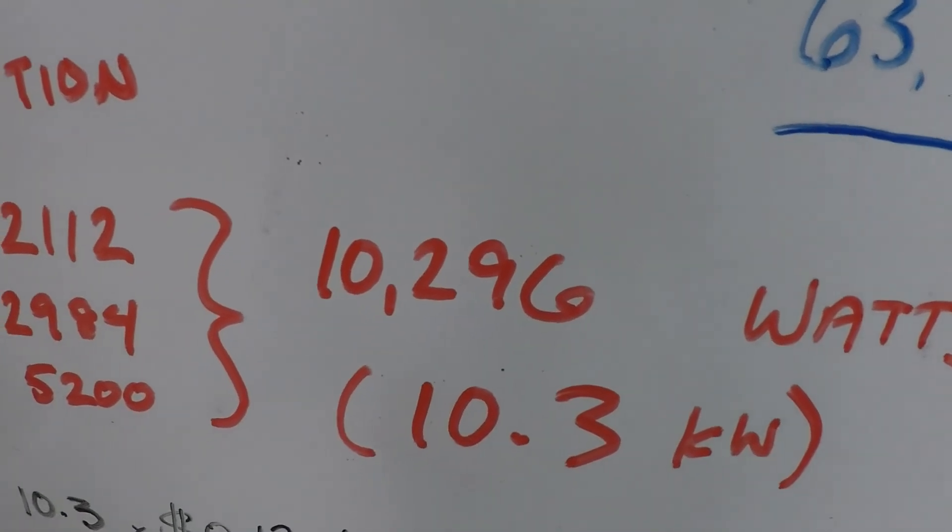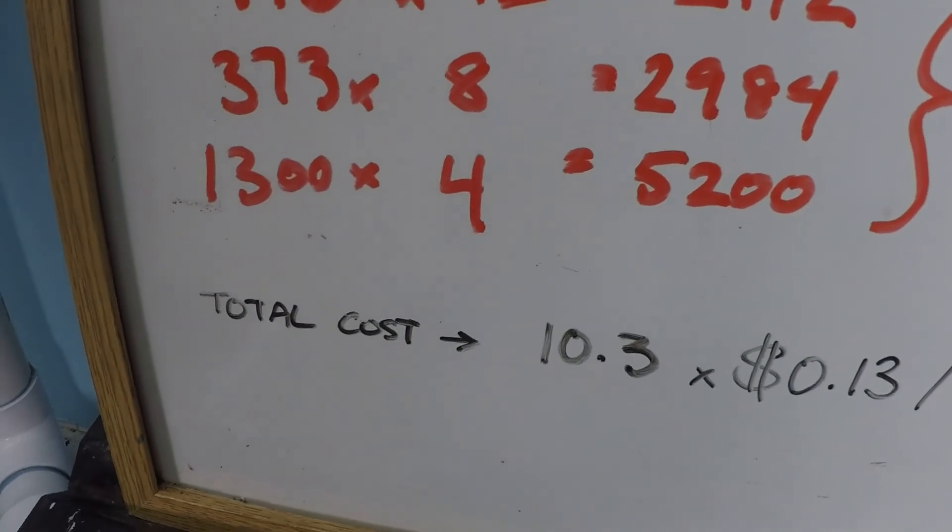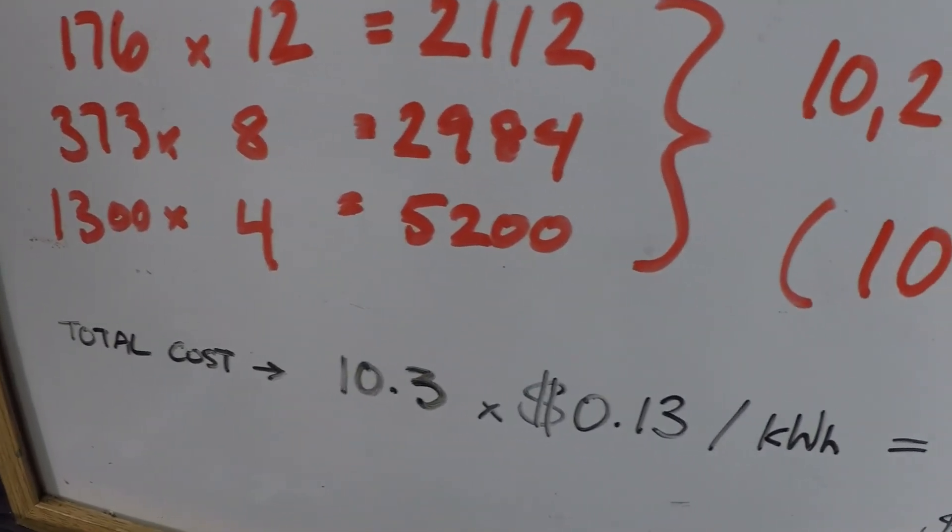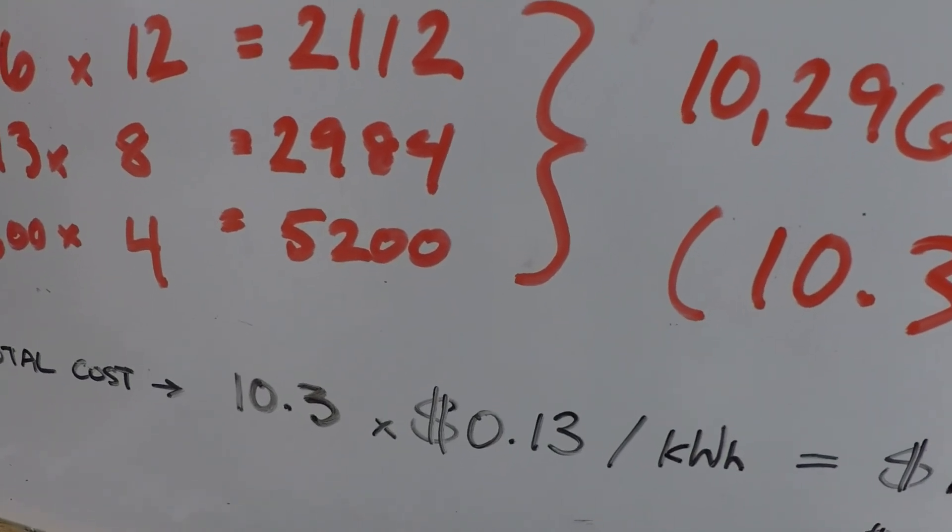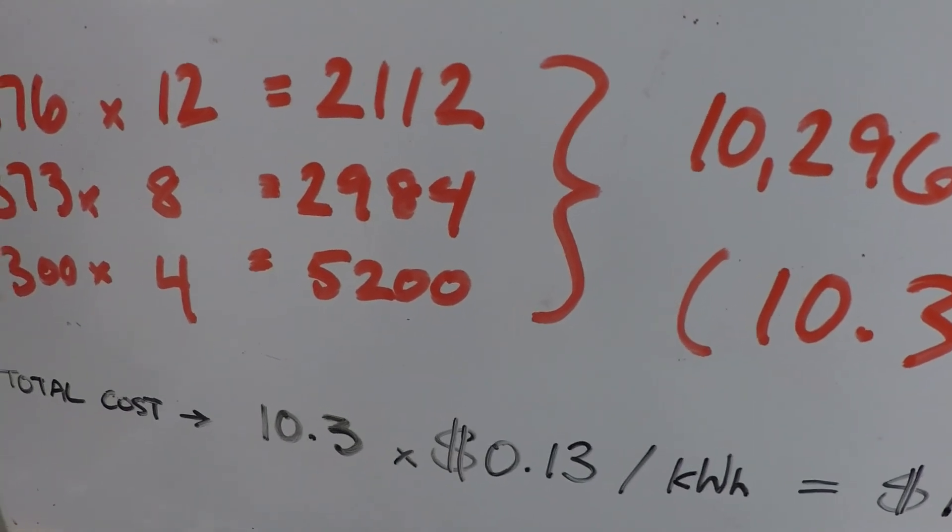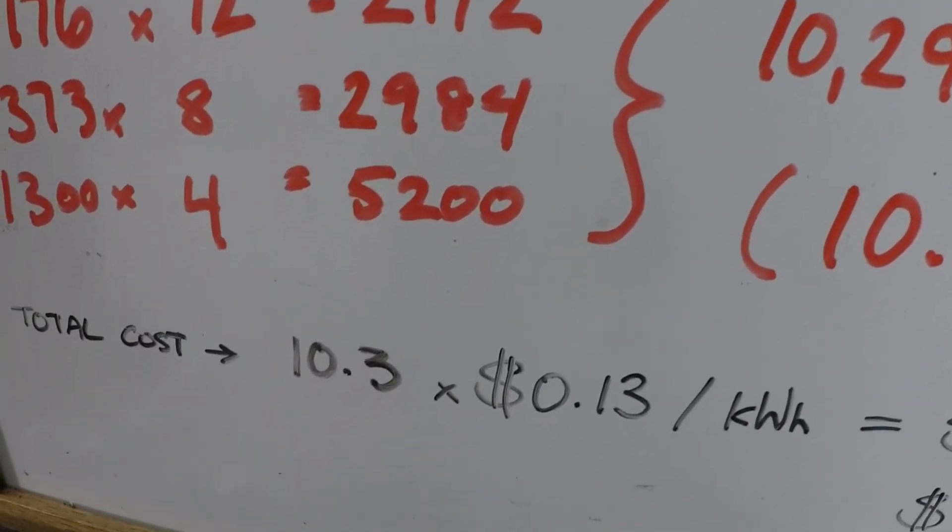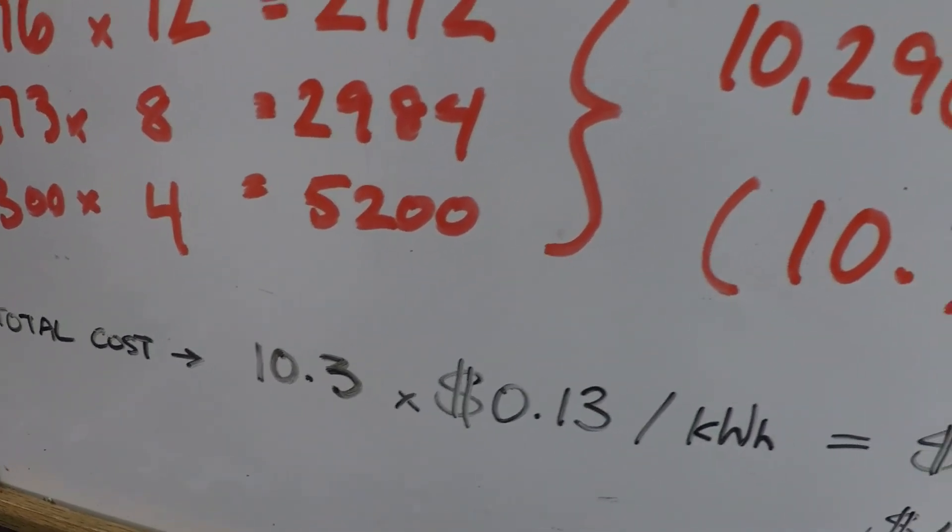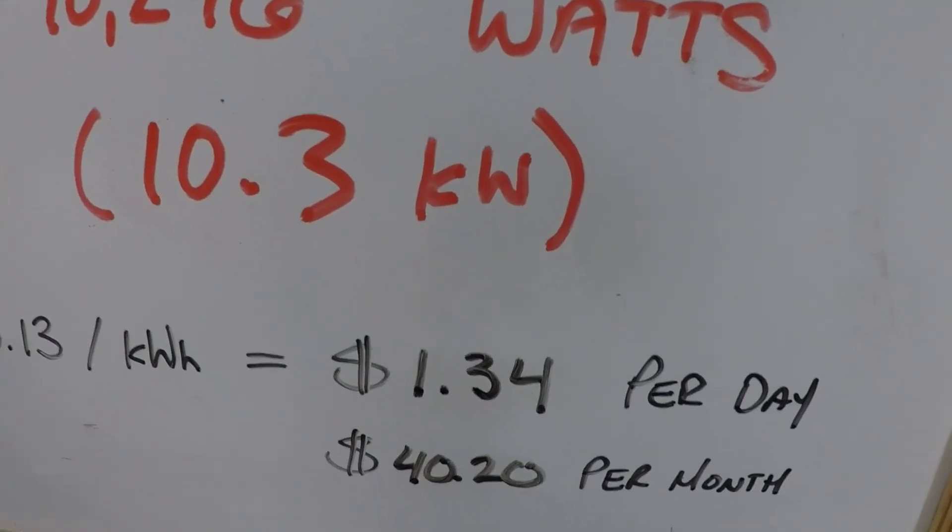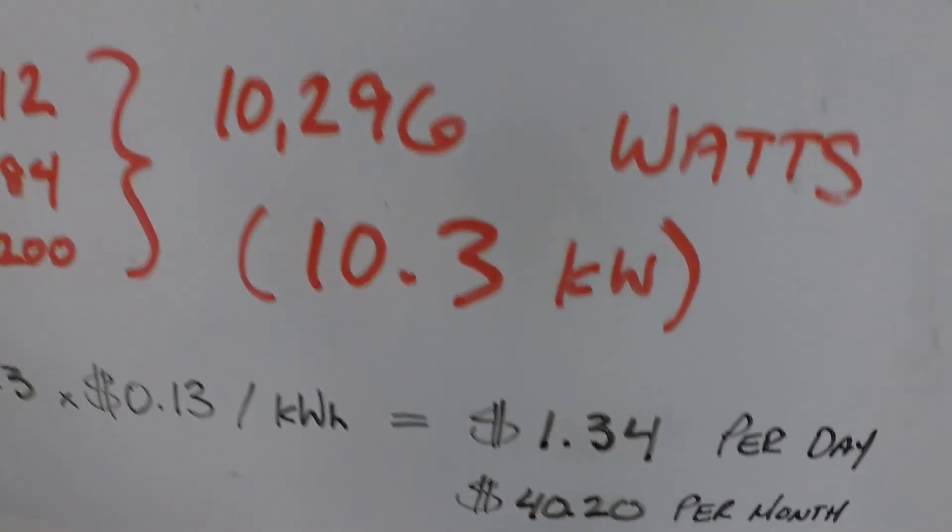Back to our calculation here, 10.3 kilowatts of power consumption. So let's look at the total cost for this filtration schedule. 10.3 kilowatts times the national average 13 cents per kilowatt hour. You could also substitute your own number here if you can look at your electricity bill and know what you pay per kilowatt hour. But the national average is 13 cents.